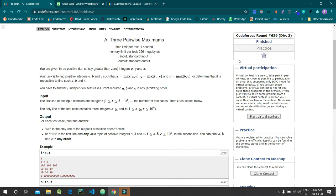Welcome back guys. Today I'll be discussing Codeforces Round 656, the first problem: Three Pairwise Maximums. We are given three positive numbers x, y, and z, and we need to find a, b, and c.